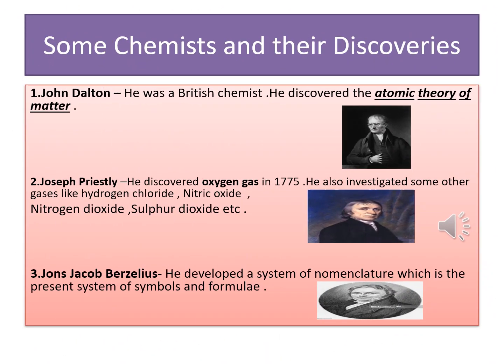Our next topic is chemists and their discoveries. First is John Dalton, a British chemist who discovered the atomic theory of matter. Matter is anything that has mass and occupies space. All matter in the universe is composed of tiny particles called atoms. He also described fundamental particles like electrons, protons, and neutrons. Second is Joseph Priestley, who discovered oxygen gas in 1775. This oxygen gas is known as a combustible gas — it helps in the burning process.